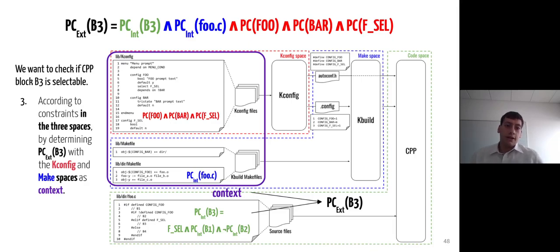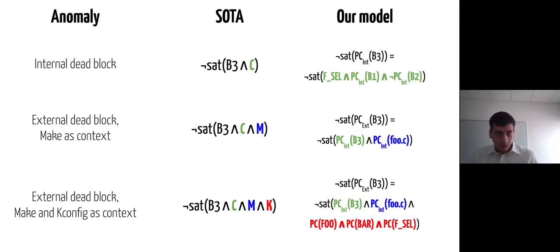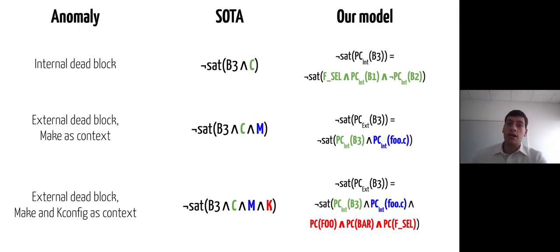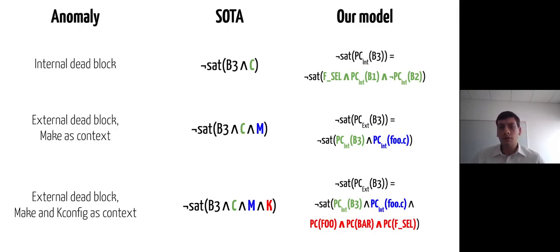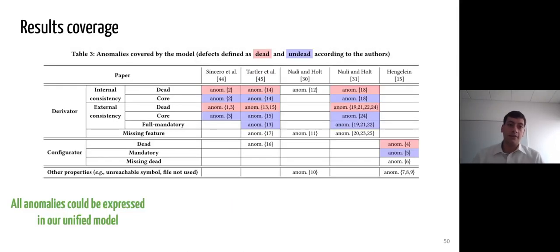We will now illustrate how internal and external presence conditions allow checking for internally and externally dead anomalies. To check if B3 is an internally dead block, we check the satisfiability of the internal presence condition of B3. To check that B3 is an externally dead block, we check the satisfiability of the external presence condition of B3. By comparing the formulas we obtained with formulas given for the same defects in the state-of-the-art, our representation gives more fine-grained expressions, exhibiting only the assets considered in every space. We applied this mechanism for all 25 anomalies and obtained the following results.